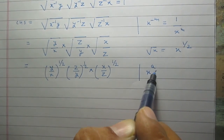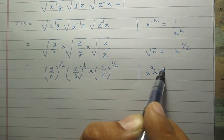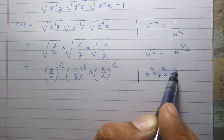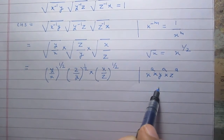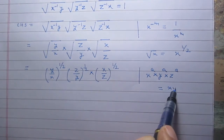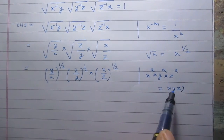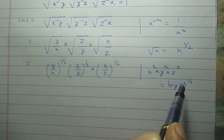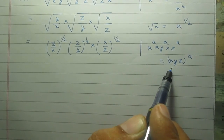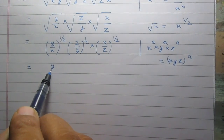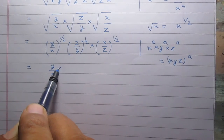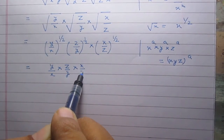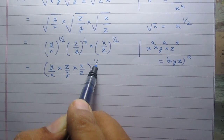Once again we know that x raised to the power a multiplied by y raised to the power a, then z raised to the power a — according to the laws of exponents we can write it as x multiplied by y multiplied by z whole raised to the power a, the common power. So using this relation we can write it as y upon x multiplied by z upon y multiplied by x upon z, whole raised to the power 1 by 2.